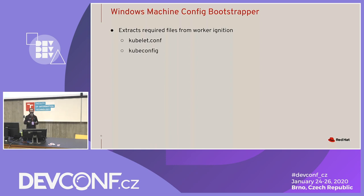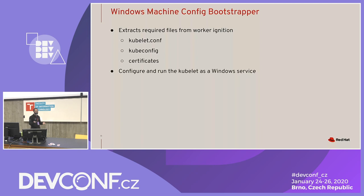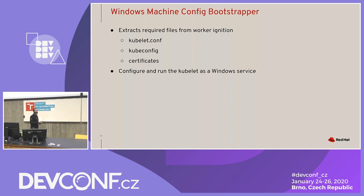From the worker ignition we also get kubelet configs — a bootstrap kubelet config to bootstrap the node, and the main cluster kubelet config, since other software pieces in that node depend on them. We also pull the required certs. The WMCB then configures and runs the kubelet as a Windows service — the first step in joining the cluster.